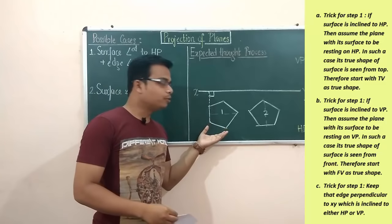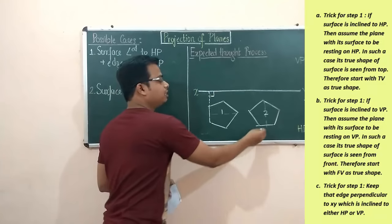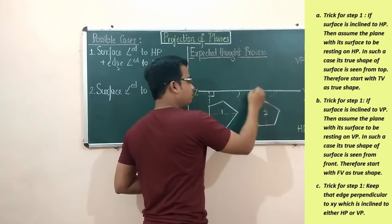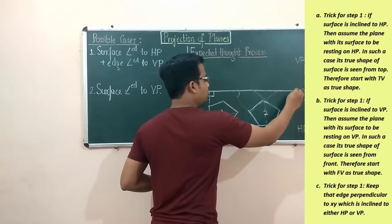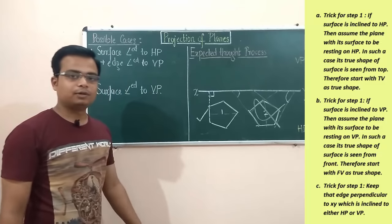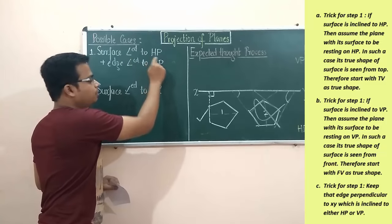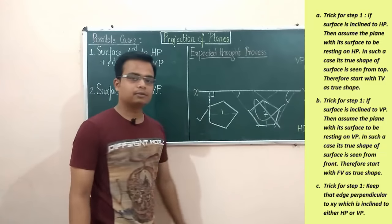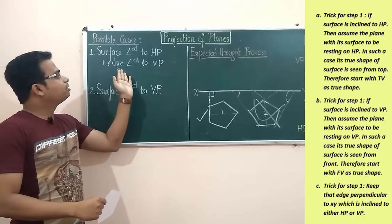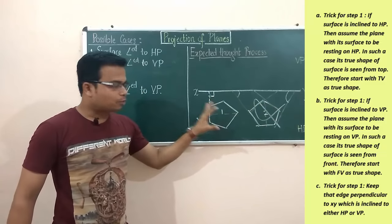In this top view, this edge over here is perpendicular to XY, whereas in option two none of the edges are perpendicular to XY. So we are rejecting option two and accepting option one. If only the surface-inclined-to-HP condition is given, both options are correct. But if edge inclined to VP is also specified, you must reject option two and go with option one.